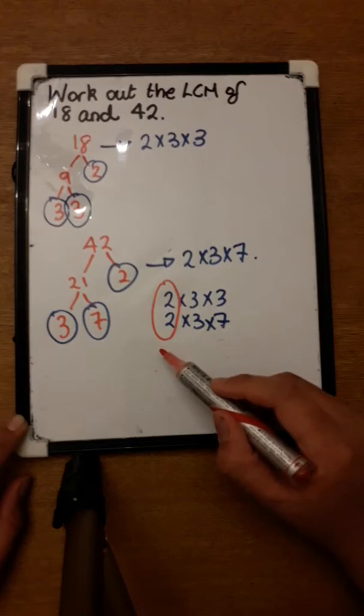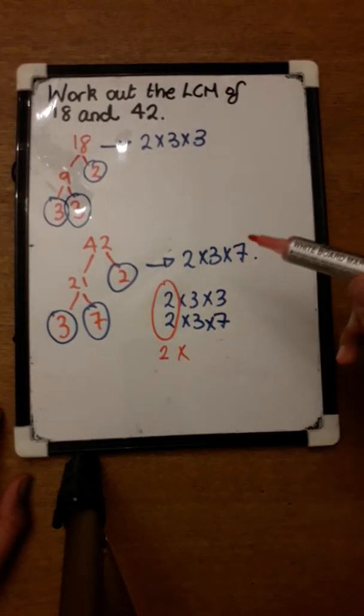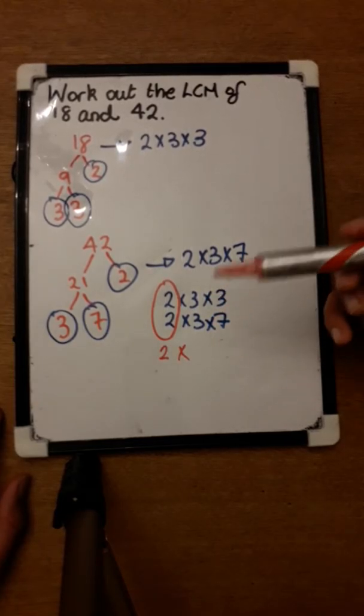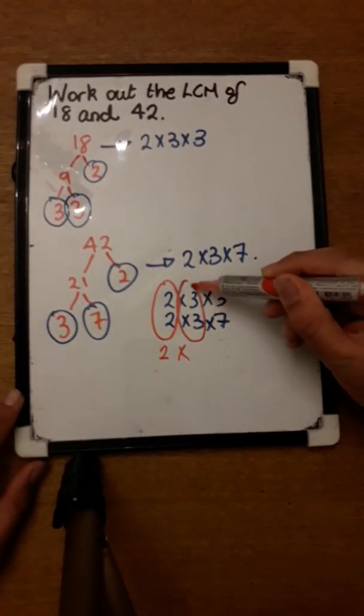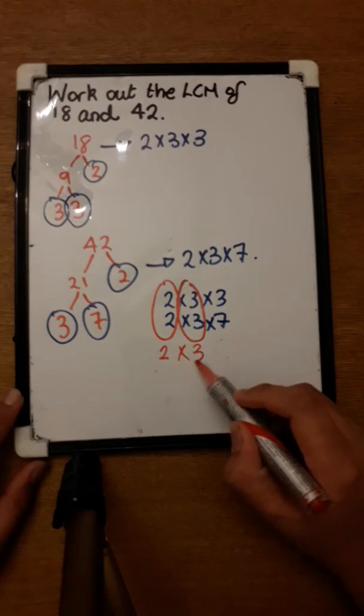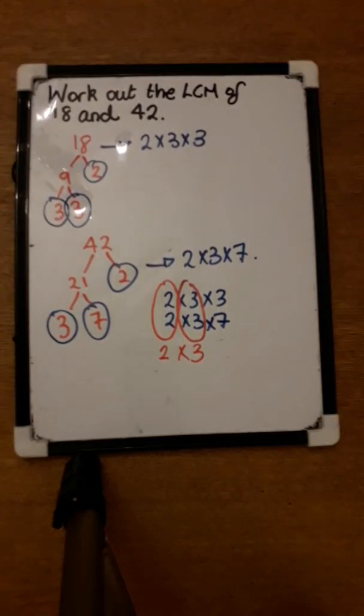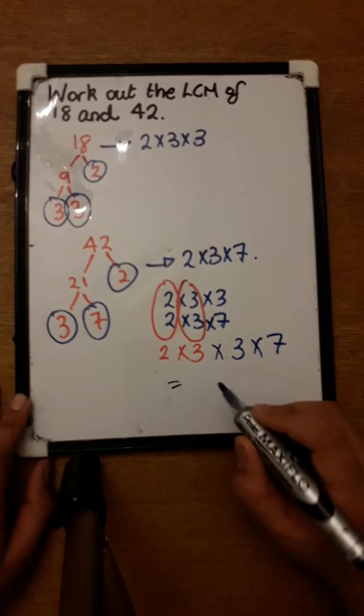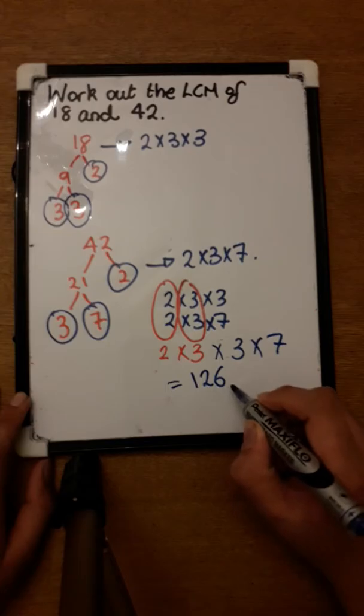That will just count as 2. And there's one pair of 3 in each, so it will just count as 3. So it's going to be 2 times 3, and as you can see there's no other pairs that can go together, so you simply multiply it by 3 and by 7, which gives you 126.